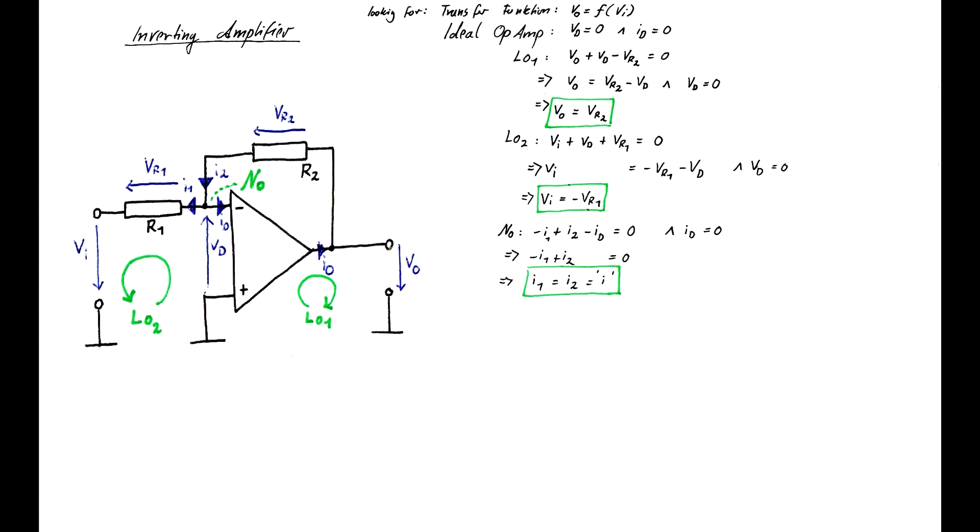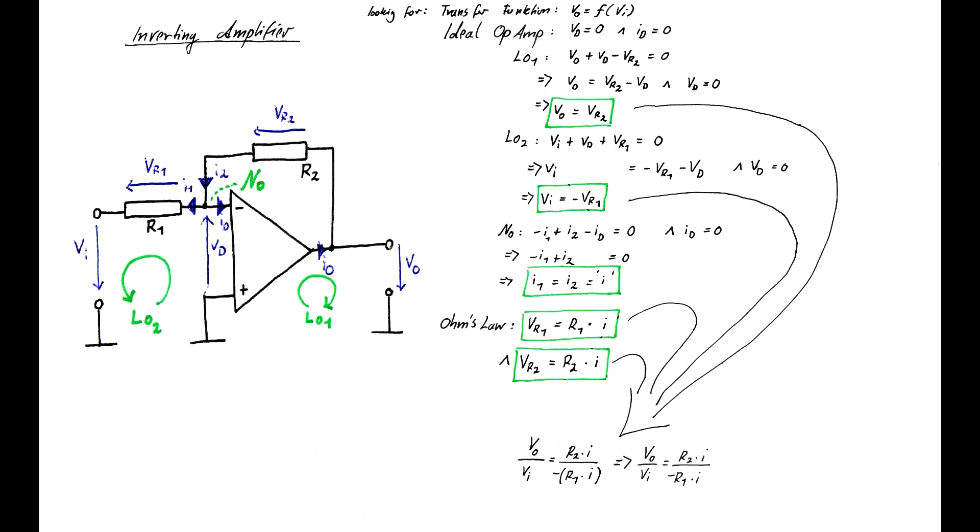Now, with the knowledge of that common current and the help of Ohm's law, it is possible to calculate the two voltage drops over the resistors R1 and R2. Now, we can insert the voltages VR1 and VR2 in the two mesh equations which we earlier transposed for VI and VO. To get the transfer function, we now only need to divide VO by VI and transpose for VO. After some minor conversions, we obtain the actual transfer function of the inverting amplifier to be seen here in the green box, VO equals minus VI times R2 over R1.